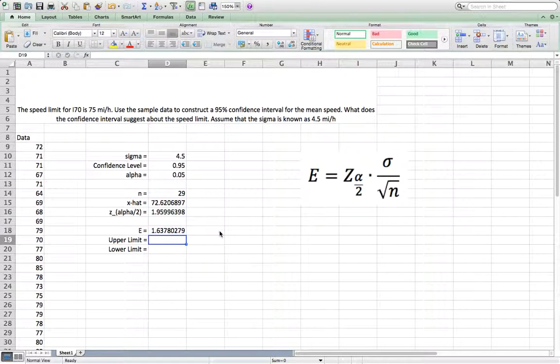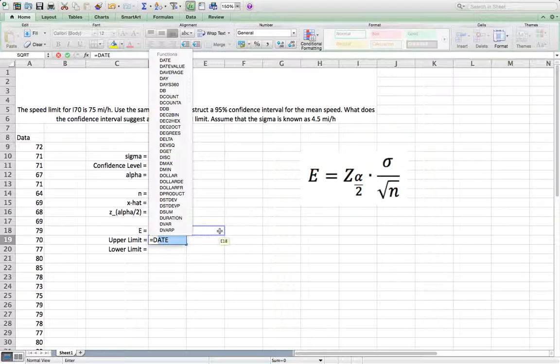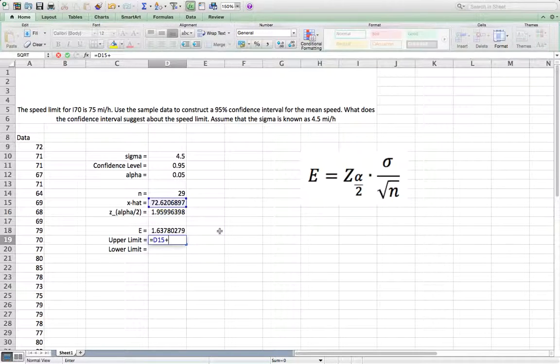Now let's calculate the upper limit of the confidence interval. That will equal x hat, which is the mean of the sample located in D15 plus the margin of error, which is D18.